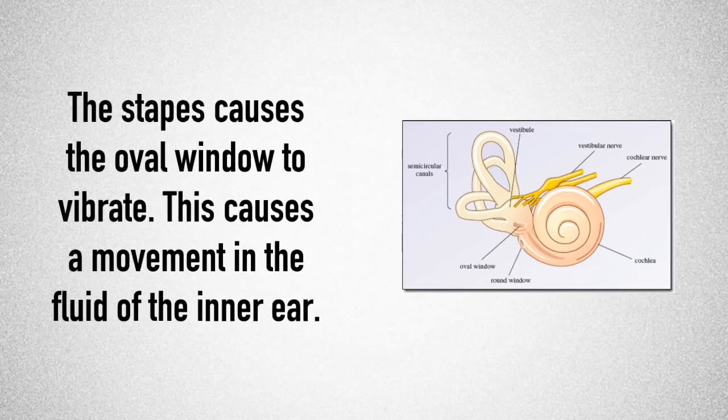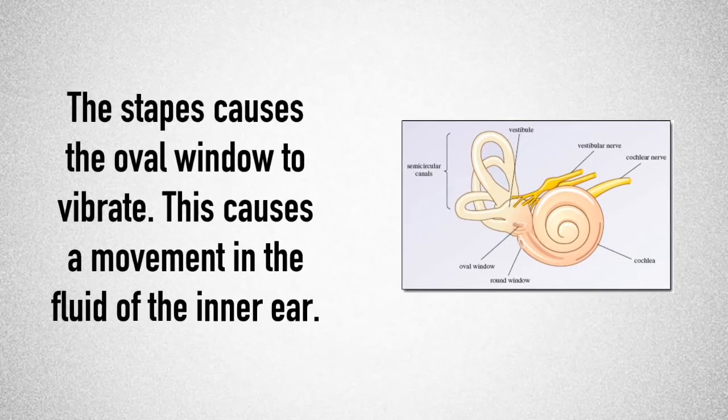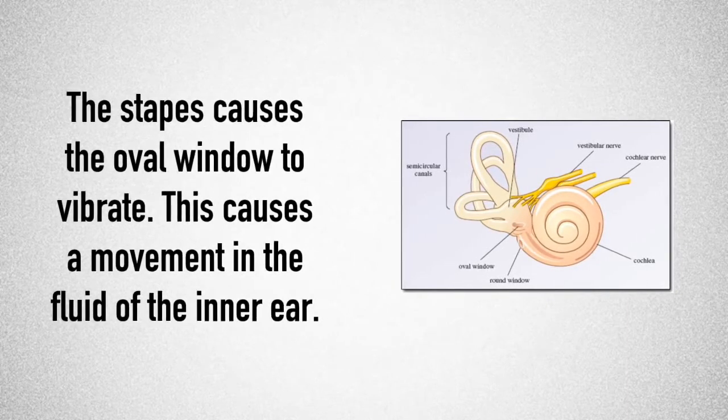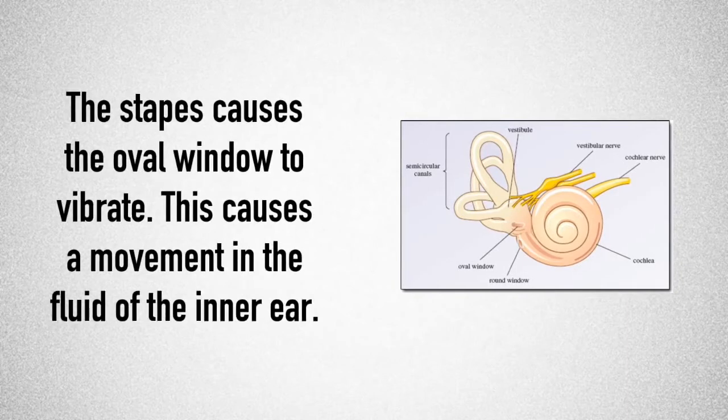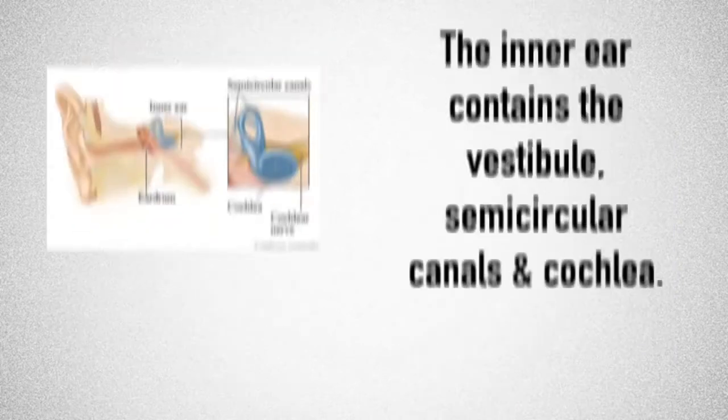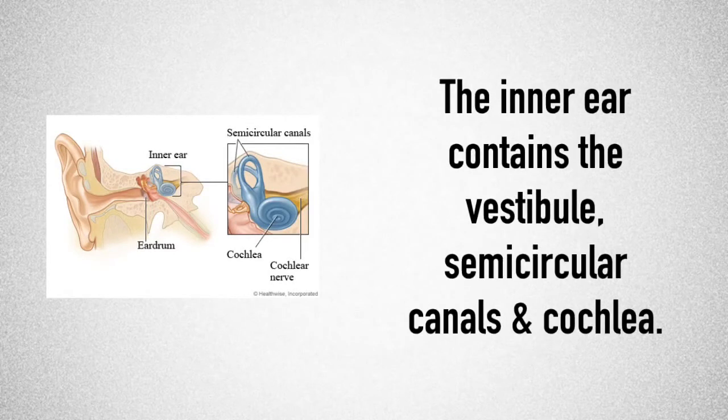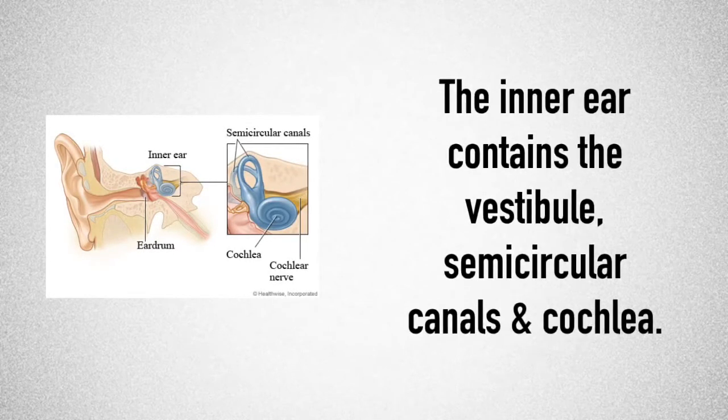The inner ear is filled with fluid, and as the fluid changes its shape or flows differently, it causes an electrochemical impulse to form. The inner ear contains the vestibule, semicircular canals, and the cochlea.